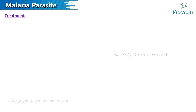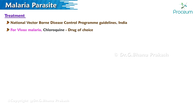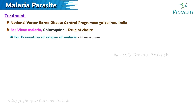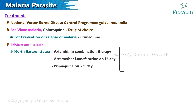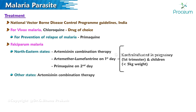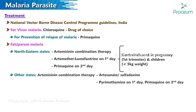Treatment: according to National Vector-Borne Disease Control Program guidelines, India — for vivax malaria, chloroquine is the drug of choice; for prevention of relapse, primaquine is used. For falciparum malaria in northeastern states, the regimen includes artemisinin combination therapy: artemether-lumefantrine on the first day and primaquine on the second day. Note: artemether-lumefantrine is contraindicated in pregnancy in the first trimester and in children less than 5 kg. For other states, the regimen is artesunate plus sulfadoxine-pyrimethamine on day one and primaquine on day two.